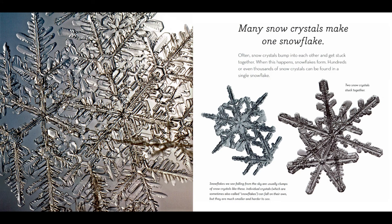Many snow crystals make one snowflake. Often, snow crystals bump into each other and get stuck together — when this happens, snowflakes form. Hundreds or even thousands of snow crystals can be found in a single snowflake. Snowflakes we see falling from the sky are usually clumps of snow crystals. Individual crystals, which are sometimes also called snowflakes, can fall on their own, but they are much smaller and harder to see.